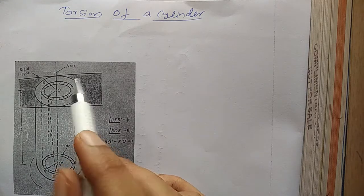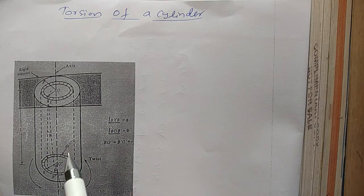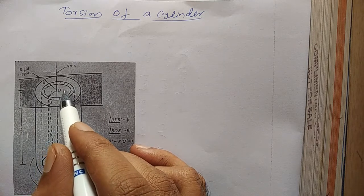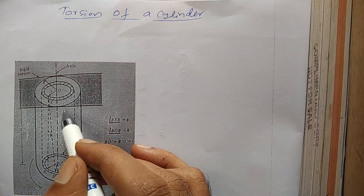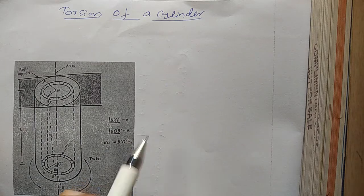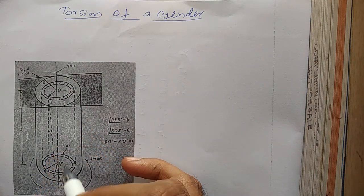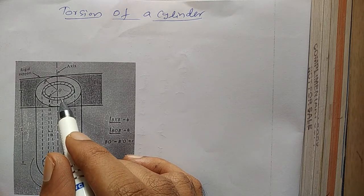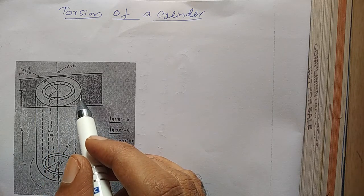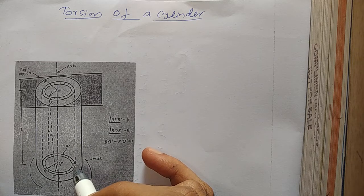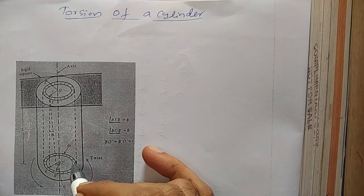If the rod is twisted, the concentric layers of the cylinder will slide one over the other. The moment is zero at the top end and it gradually increases as we go down, because on the top side it is fixed and we give the rotation on the bottom side. So the twisting is more at the bottom and becomes zero at the top. Let us consider one concentric circular layer of radius r and thickness dr.